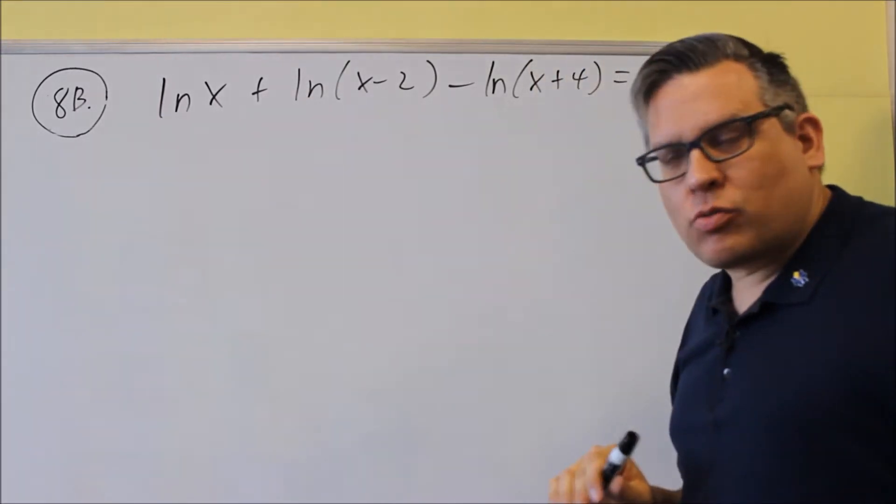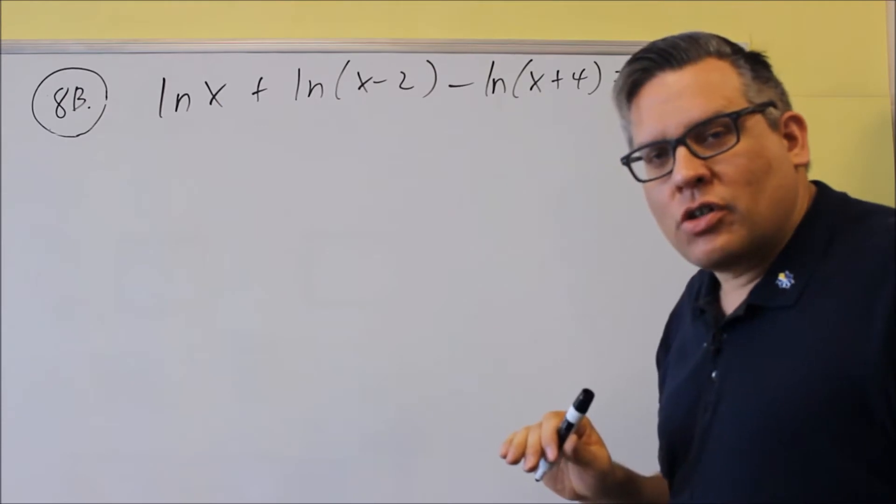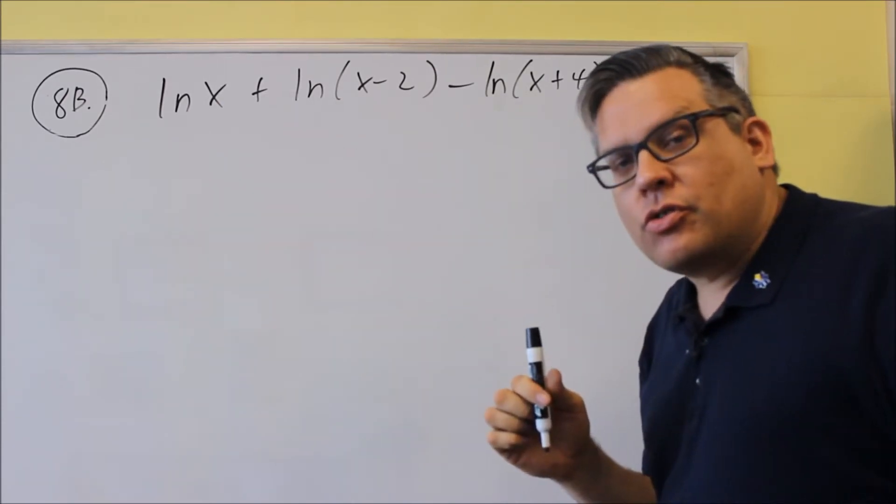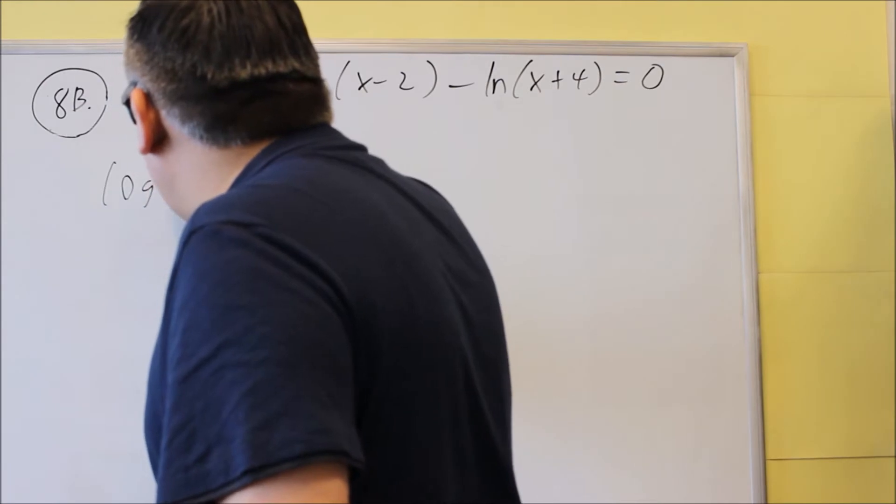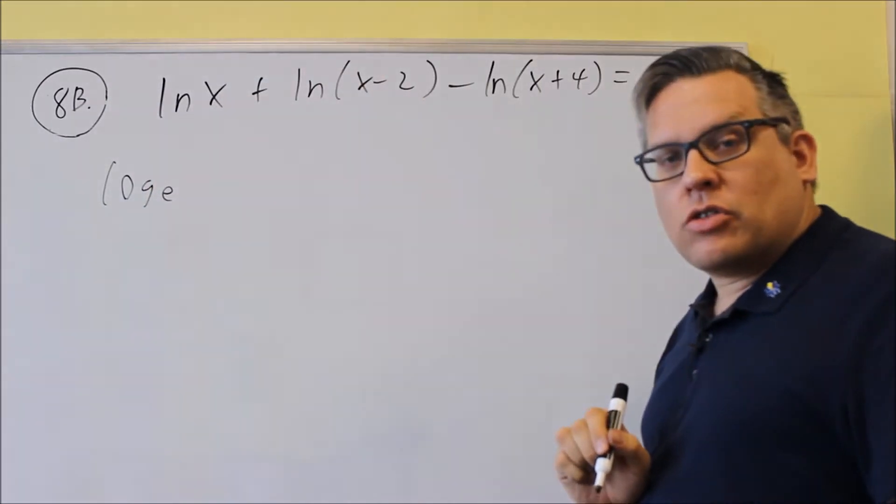Now there's two of them here. There's a plus. We'll combine those together first. Plus means that it will turn into multiplication. So natural log, again, is the same thing as a log base e,